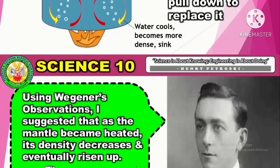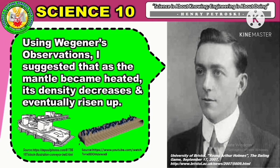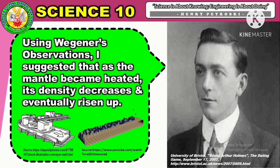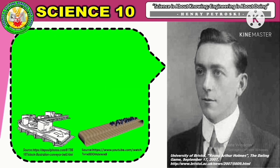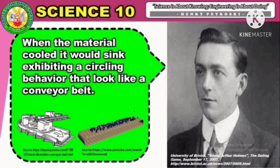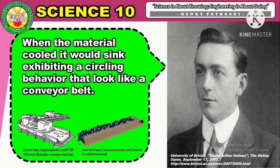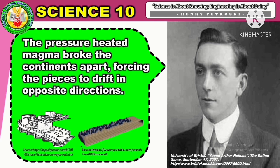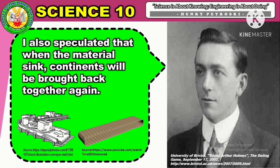This is exactly what happens in the Earth's mantle. Using Wegener's observations, it was suggested that as the mantle became heated, its density decreases and it eventually rises. When the material cooled, it would sink, exhibiting behavior that looked like a conveyor belt. The pressure of heated magma broke the continents apart, forcing the pieces to drift in opposite directions. When materials sink, continents will be brought back together again.